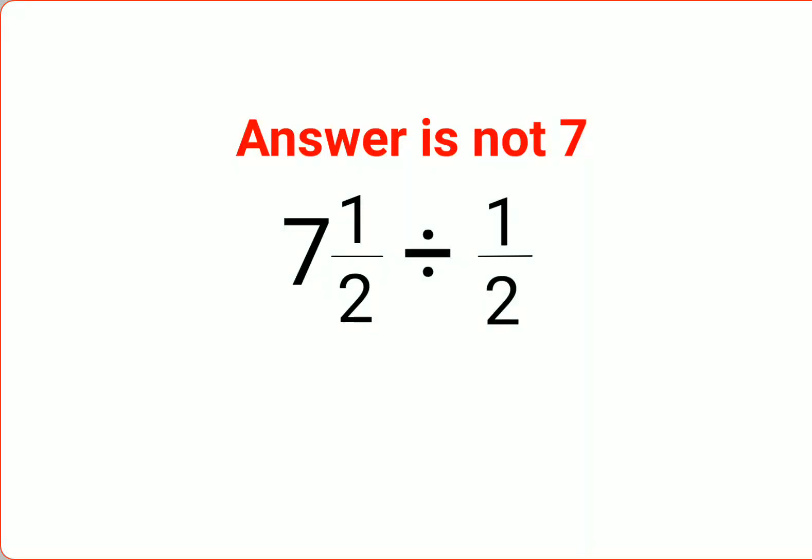Welcome everyone. A lot of people thought that 7 1/2 divided by 1/2 - what happens is we can just cancel the 1/2s and we are left with 7 divided by 1, so the answer is basically 7, right?